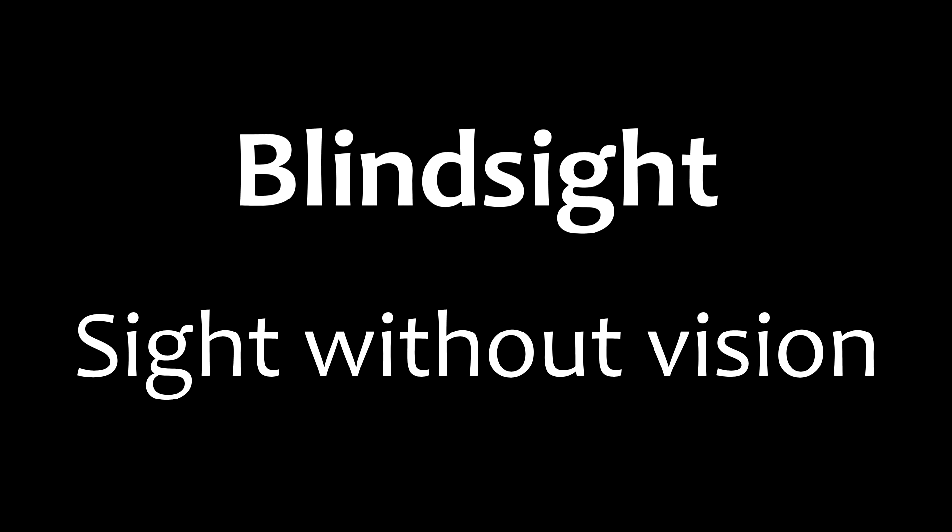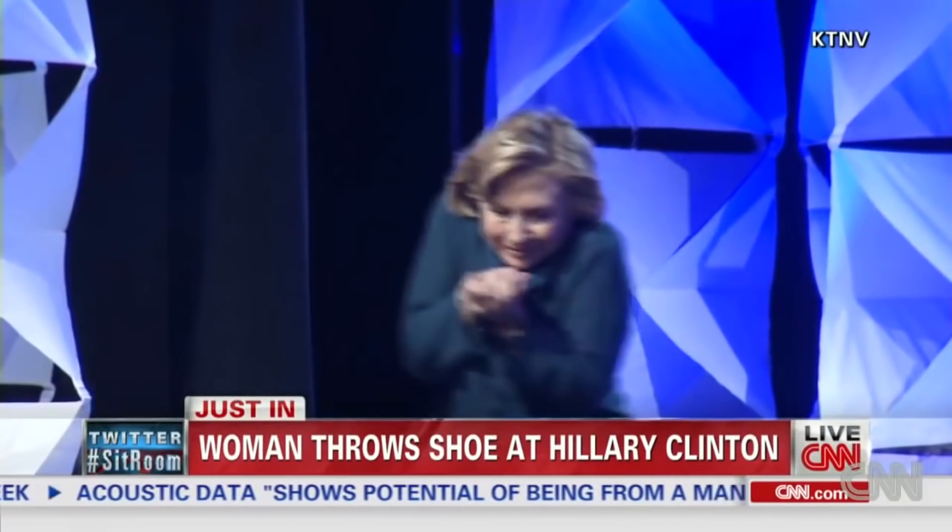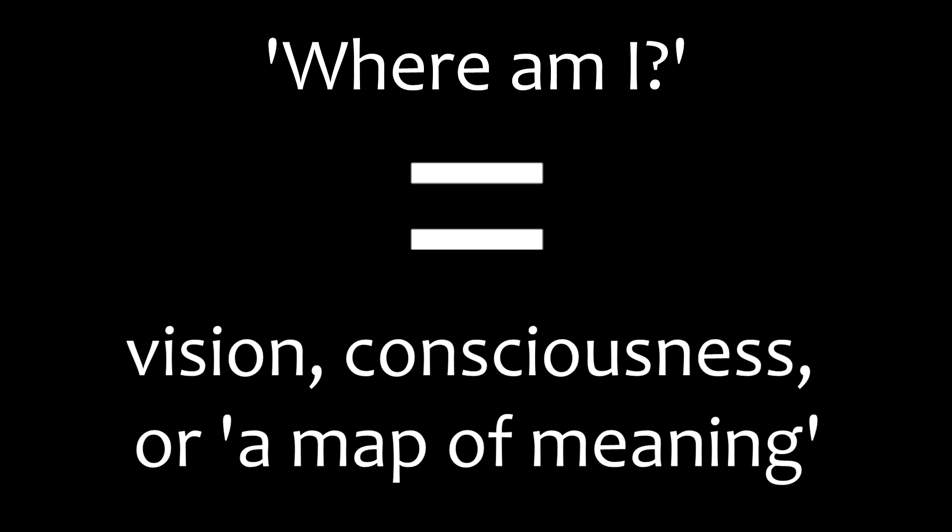Blindsight shows us that vision is not required for sight. In other words, a conscious, detailed map of the spatiotemporal relationships that we share with our surroundings is not required for our bodies to behave in an informed way. And we all know this at some level from the unconscious nature of reflexive actions, like ducking when something is hurtling towards us. This also shows us that the where, or dorsal stream, process of creating spatiotemporal relational models is not the same as the integrated process of vision or conscious experience. Because these relational models are exactly how our bodies are responding to the unconscious stimuli in reflexive actions.